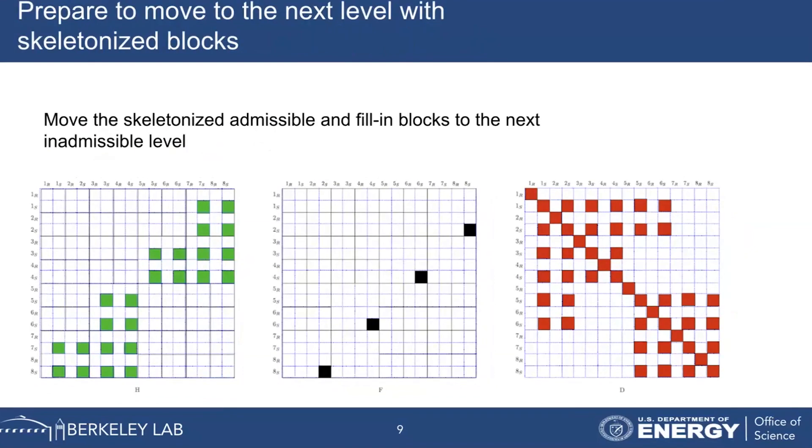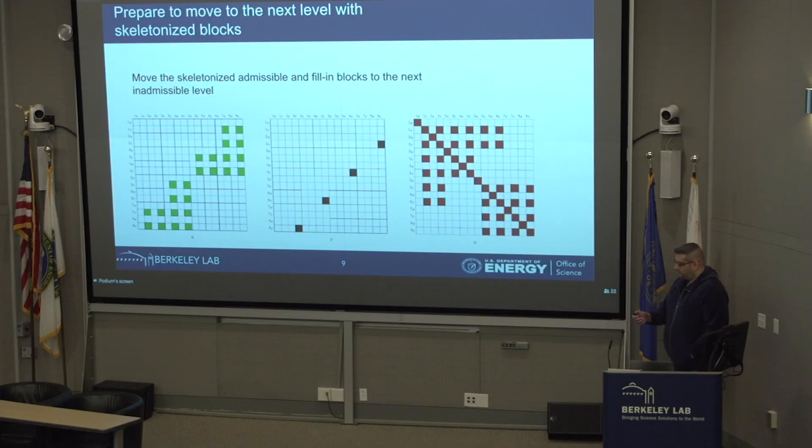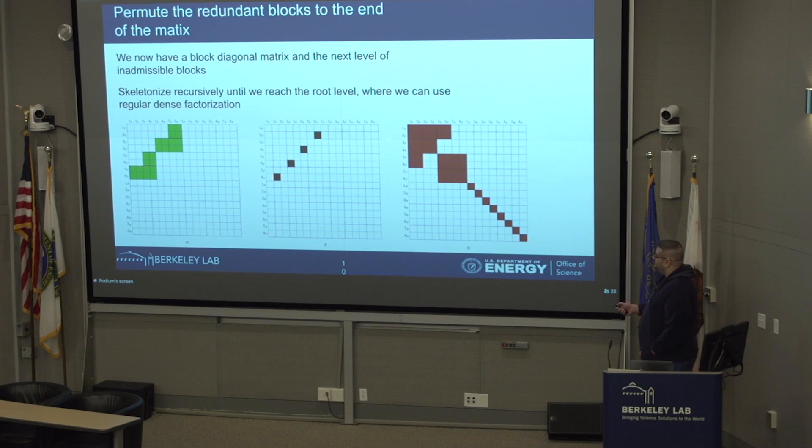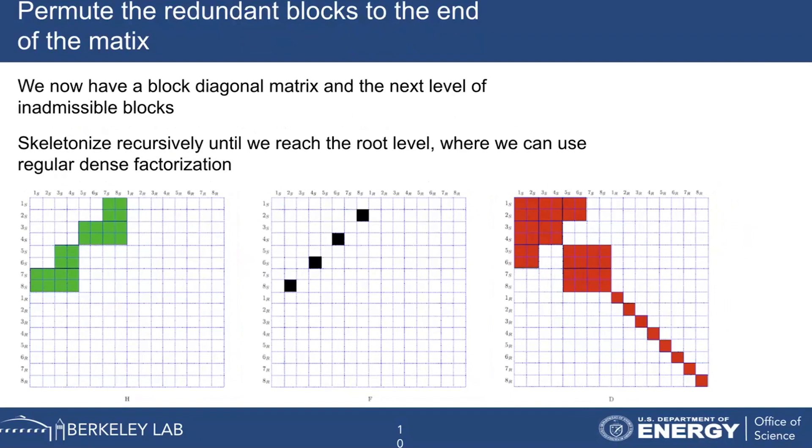To move to the next level, we're going to first move all of the blocks that were skeletonized from the admissible parts and the fill-in matrix to the inadmissible part. Then we're going to shift all of the redundant portion to the end of the matrix. Now we have a block diagonal matrix on the inadmissible part where these can be easily inverted, and then this matrix can be factorized recursively using the same method. We then turn our attention to just the skeletonized portion of this matrix and move to the next level.